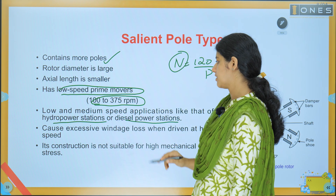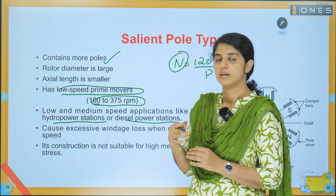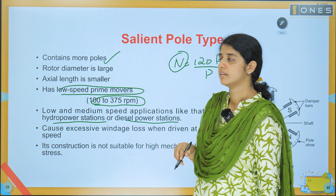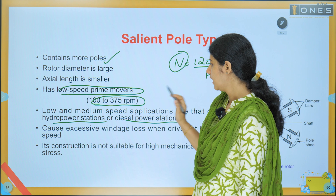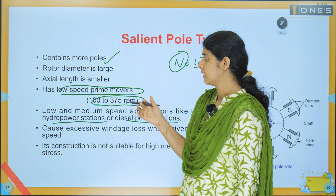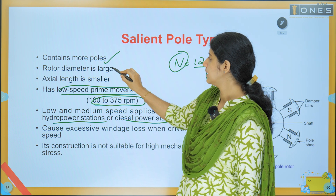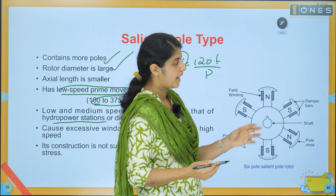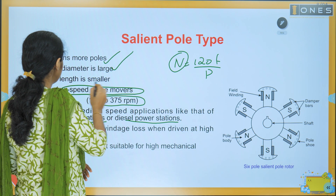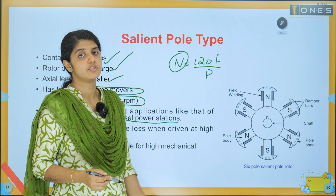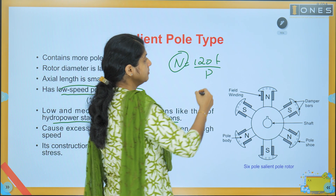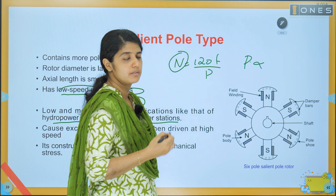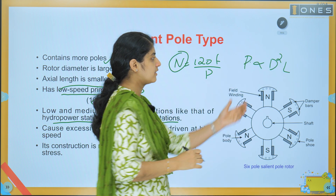We can use hydropower stations and diesel power stations. The speed range is 100 to 375 RPM, meaning the number of poles is more. The rotor diameter is large and the axial length is small. The output is proportional to the volume of the rotor: D² × L, where D is diameter and L is axial length. Since diameter is high, L is kept small.